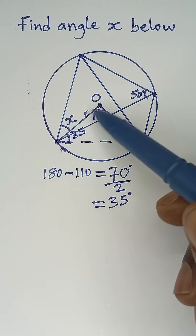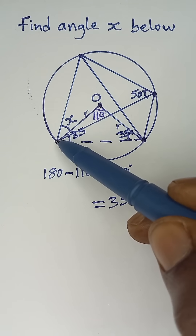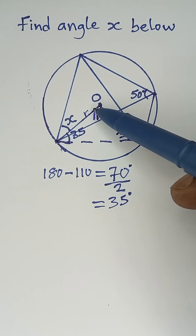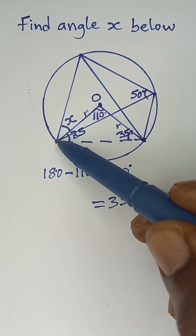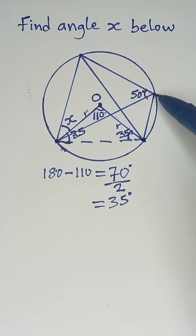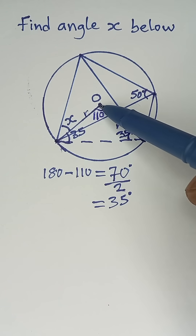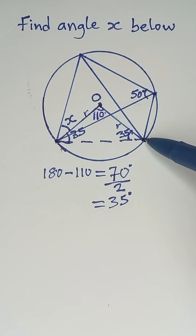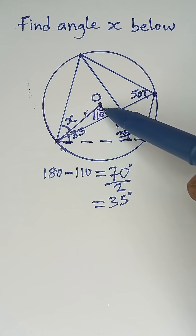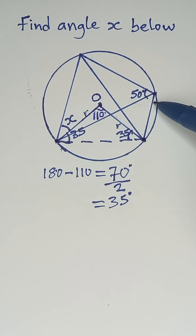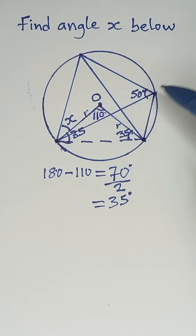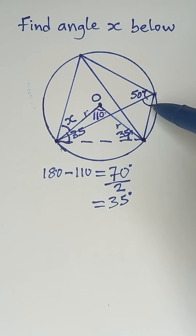Now looking at this triangle, a line starts from here and goes to the center, and another line starts from the same point and goes to the circumference to form a triangle. This shows that the angle at the center is twice the angle at the circumference. So if the angle at center is 110°, this angle at the circumference has to be 110 divided by 2, which is 55°.